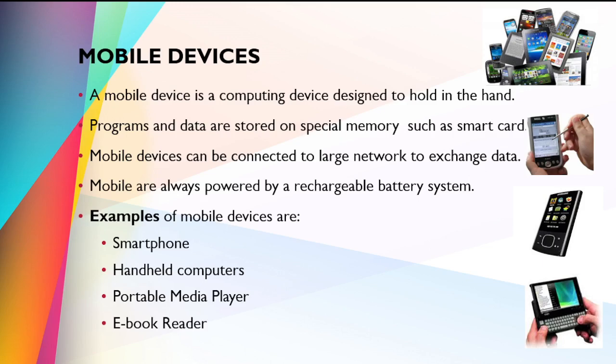Now I am going to discuss mobile devices. A mobile device is a computing device designed to be held in the hand. Mobile devices typically have small screens and some have keyboards. Mobile devices usually have no disk drives; programs and data are permanently stored on special memory or small storage media such as a smart card. Mobile devices can be connected to larger networks to exchange data and are almost always powered by a rechargeable battery. Popular types of mobile devices are smartphones, handheld computers, portable computers and ebooks.